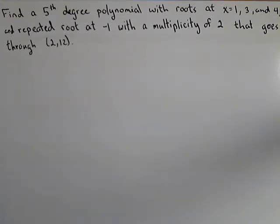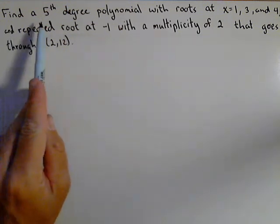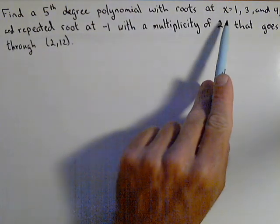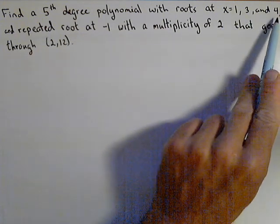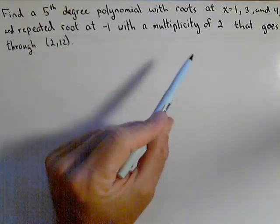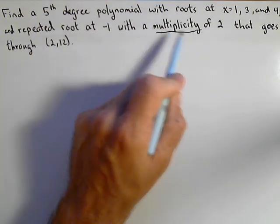In this video we're going to talk about creating a polynomial given the roots. So we're going to find a fifth degree polynomial with roots at 1, 3, 4, and then a repeated root at negative one that has what's called a multiplicity of two.